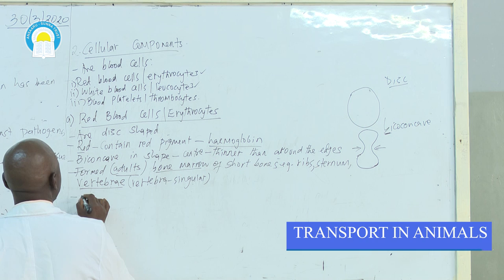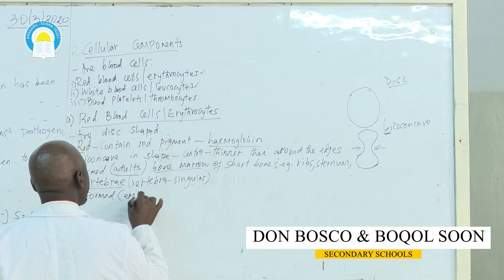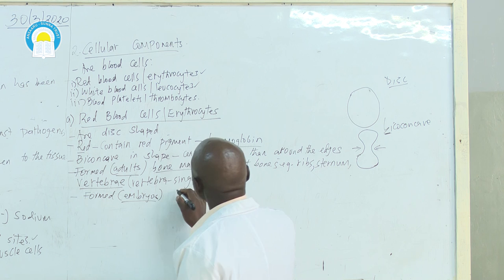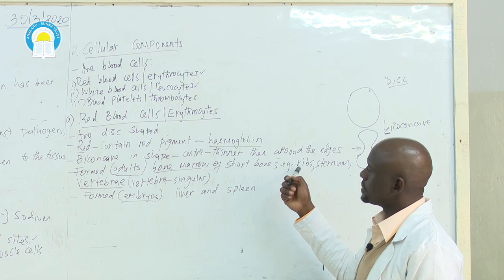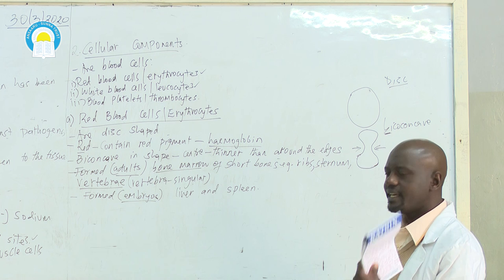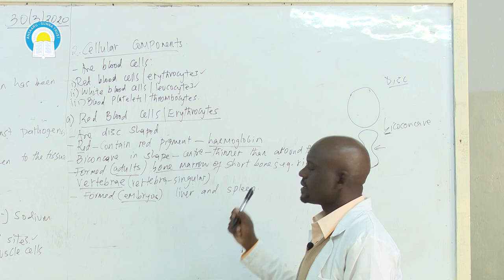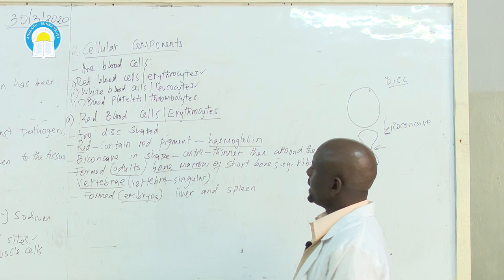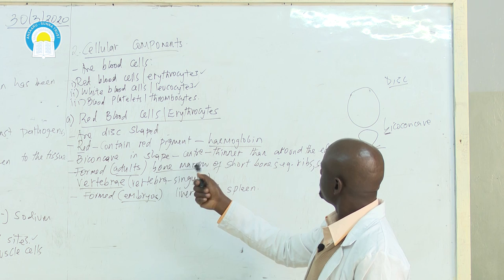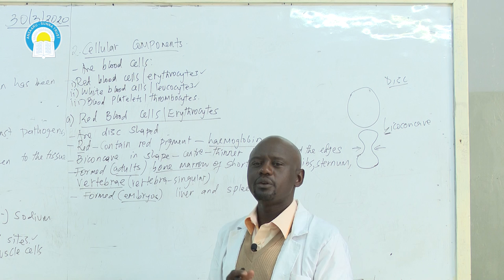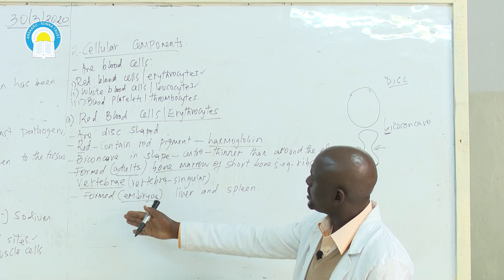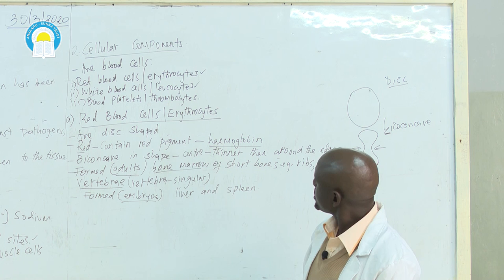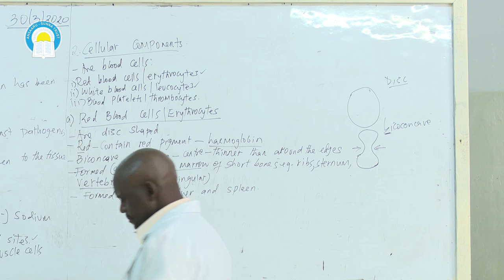In embryos, red blood cells are formed in two organs: the liver and the spleen. Embryos do not yet have fully formed bones, yet they need oxygen, so red blood cells are still formed in the liver and spleen. After birth, the role is taken over by the bone marrow of short bones — this transition happens within approximately the first year of life.